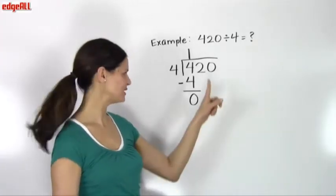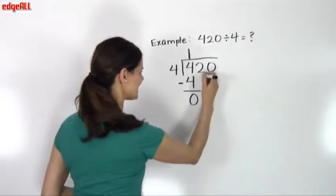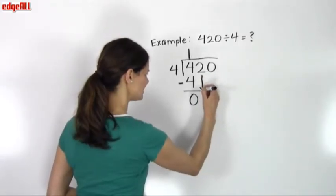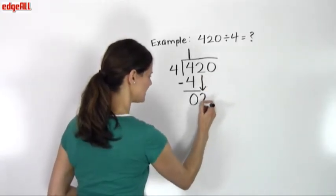The next number that I move to is the 2. I go over here, pull this 2 down, and place it here.